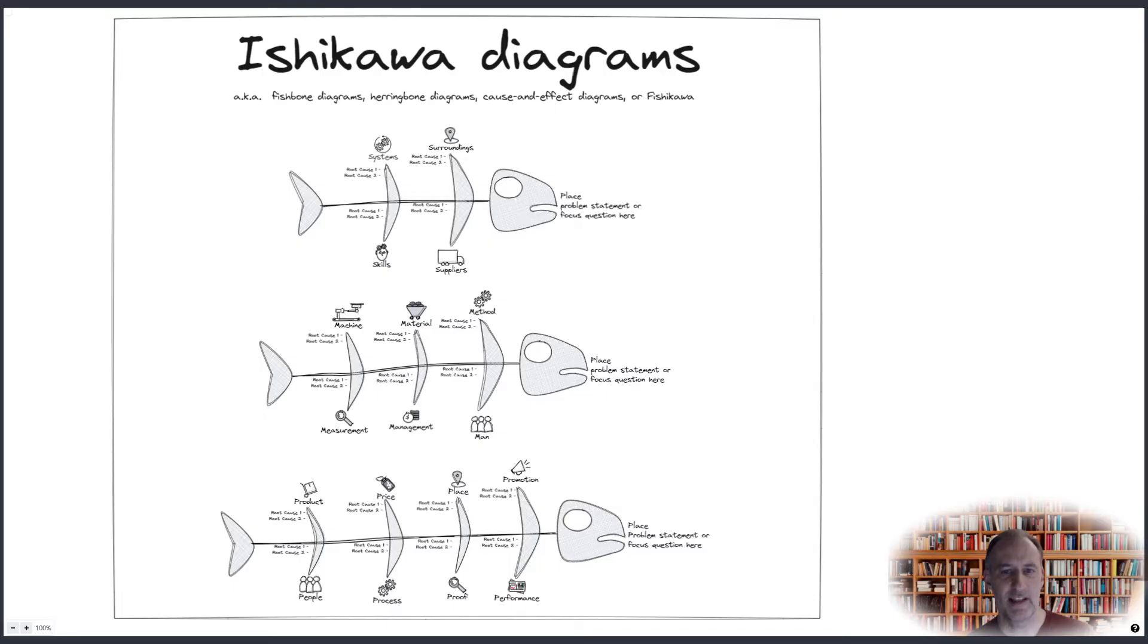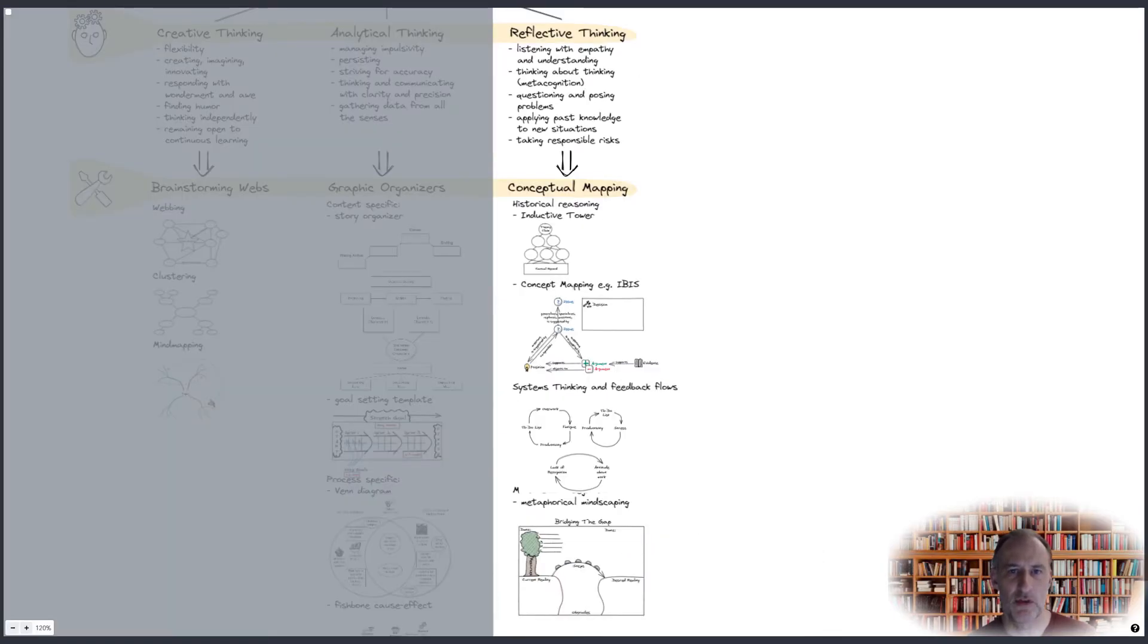The final set of tools that we will look at today are for reflective thinking. These tools will help you listen with empathy and understanding. They are tools to facilitate thinking about thinking, i.e. metacognition. Their purpose is to apply past knowledge to new situations and to take calculated risks.